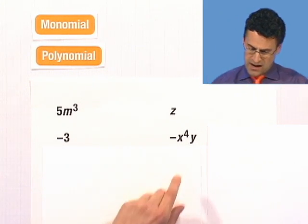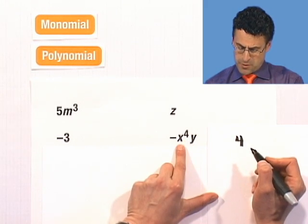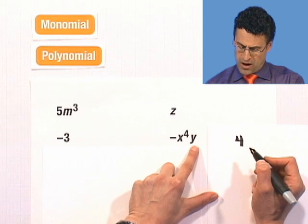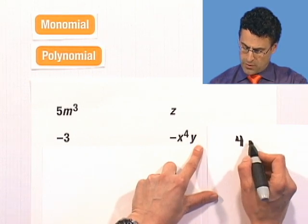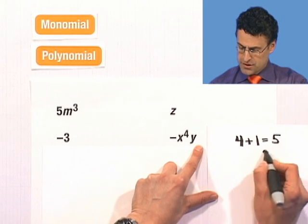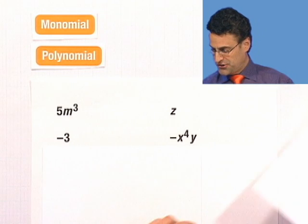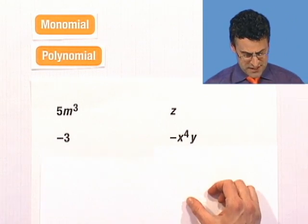So in this case, I see that I've got a 4 as the exponent on the x and I've got a 1, invisible 1, on the exponent on the y. And I add those together and I get 5. This has degree 5. A little tricky. But we got it.